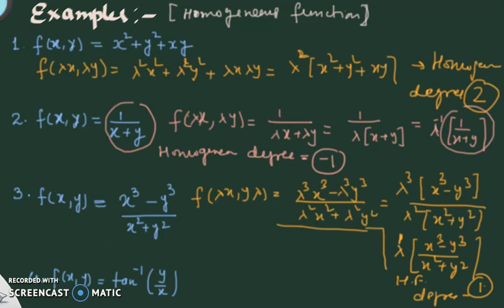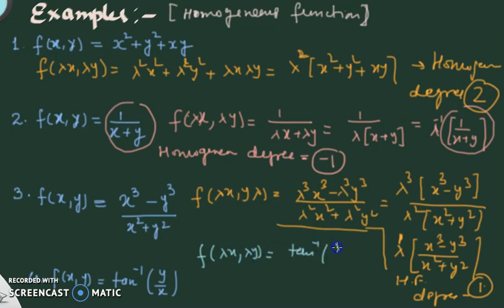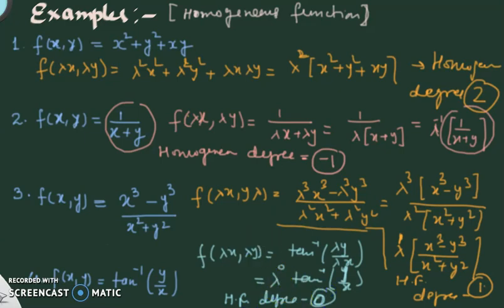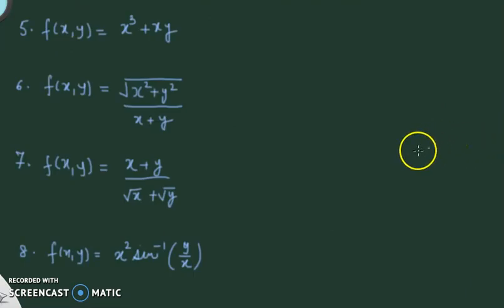For f(x,y) = tan⁻¹(y/x): putting f(λx, λy) = tan⁻¹(λy/λx). The lambdas cancel, giving tan⁻¹(y/x). Since there is no λ remaining, we can write λ⁰·f(x,y). It is a homogeneous function of degree 0.